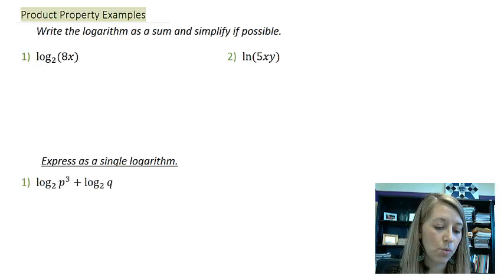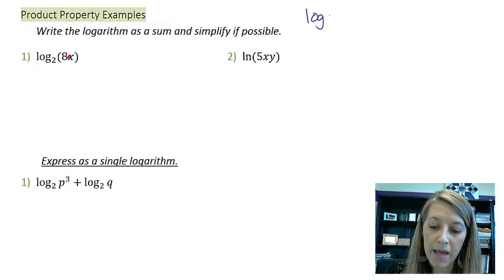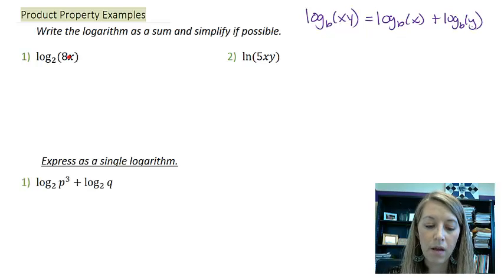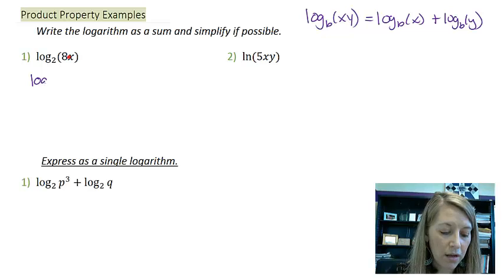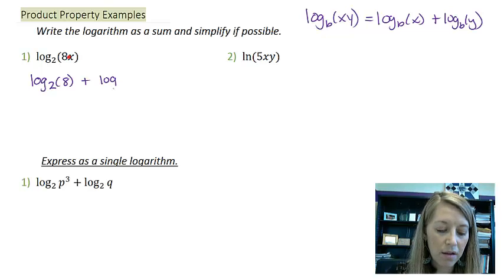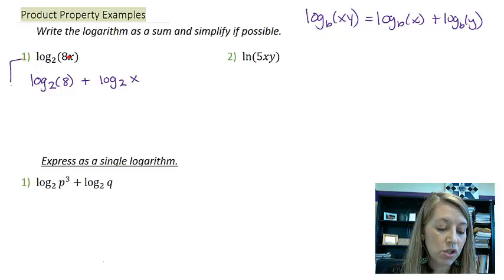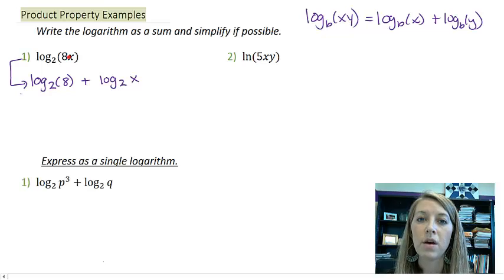Okay. So in the first one, I have a multiplication. And so my property rule says log base b of xy is log base b of x plus log base b of y. So that gives me log base 2 of 8 plus log base 2 of x. So my first step is just utilizing that product rule property that we just learned.